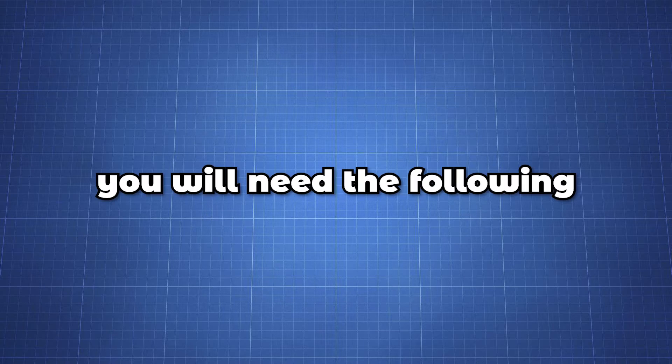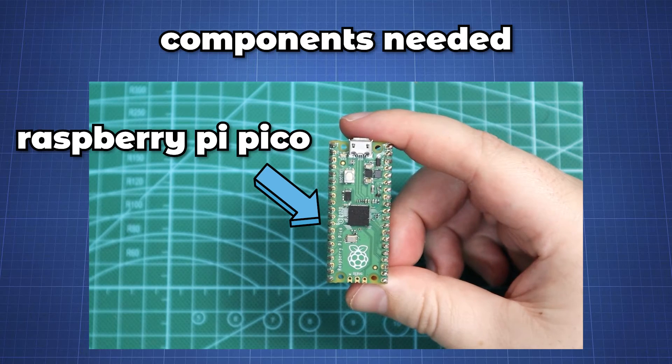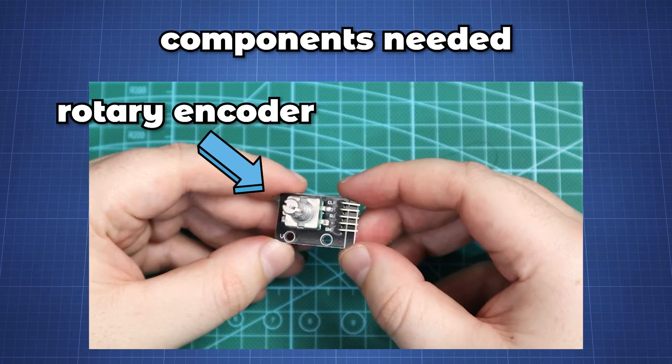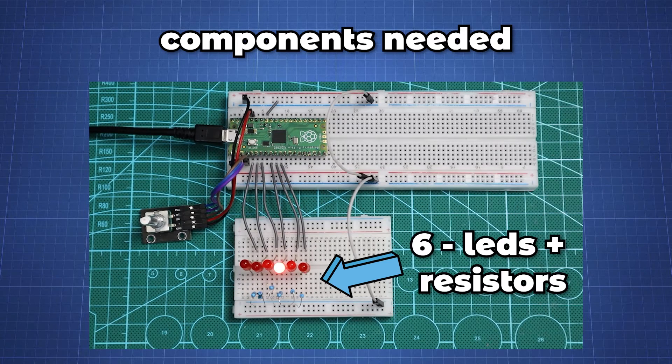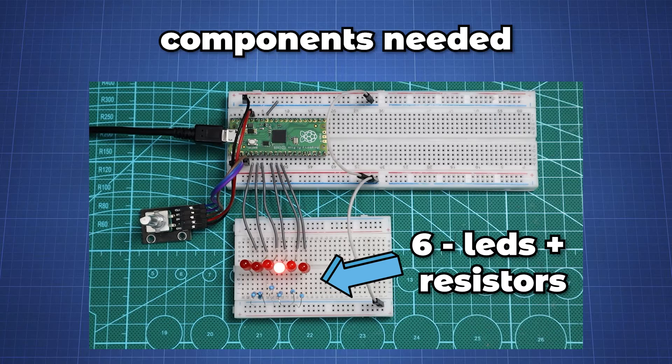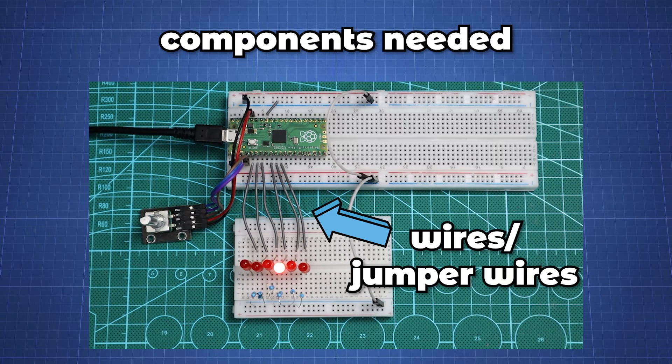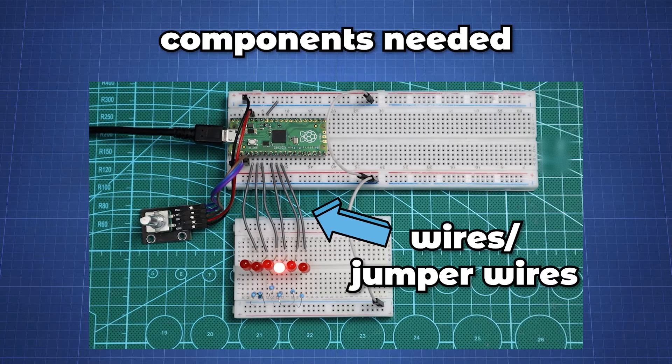To follow along with this tutorial you will need the following: A Raspberry Pi Pico running MicroPython, the rotary encoder module with a push button, breadboard and six LEDs with current limiting resistors. Anything between 300 to 1 kilo ohm will be fine and a few wires and jumper wires to make the necessary connections.